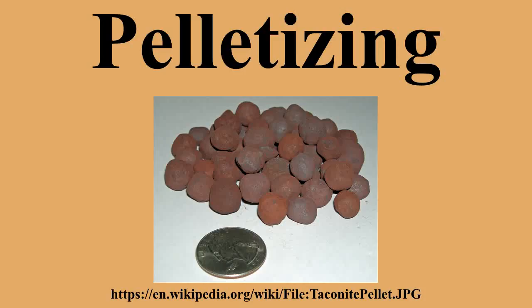Pelletizing is done in a pellet mill, where feed is normally conditioned and thermally treated in the fitted conditioners of the pellet mill. The feed is then pushed through the holes of a pellet die and exits the pellet mill as pelleted feed. After pelleting, the pellets are cooled with a cooler to bring the temperature of the feed down. Other post-pelleting applications include post-pelleting conditioning, sorting via a screen, and coating if required.